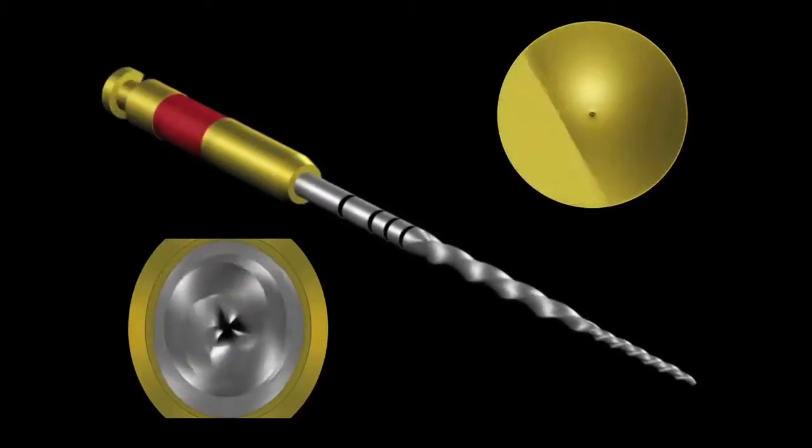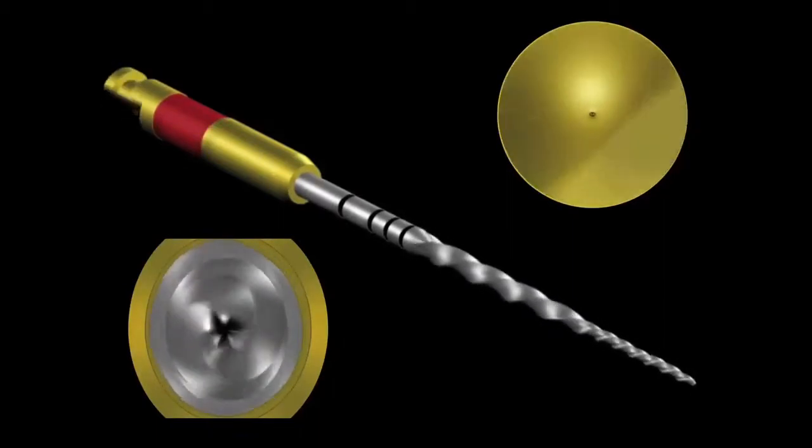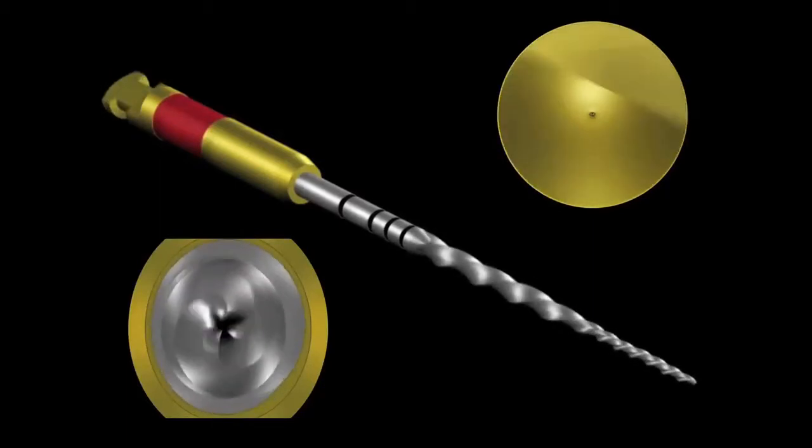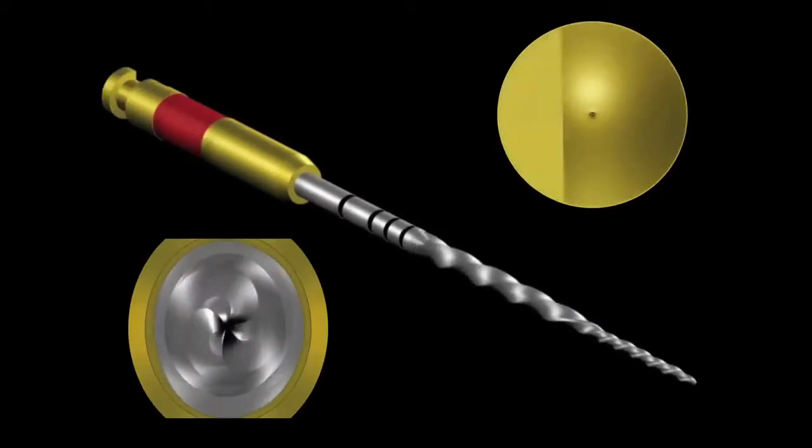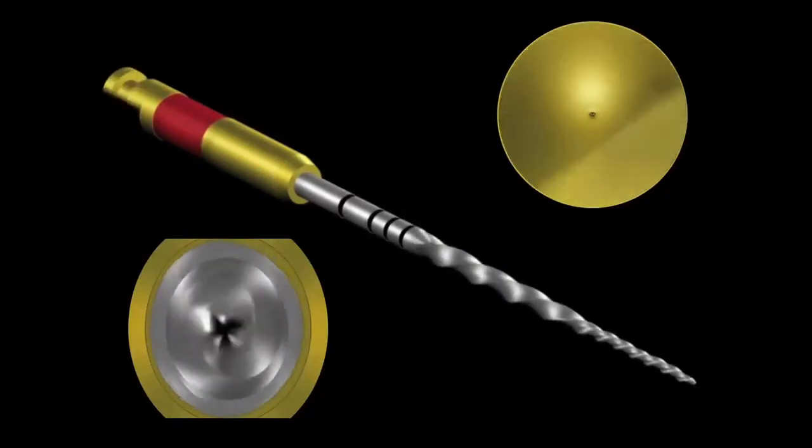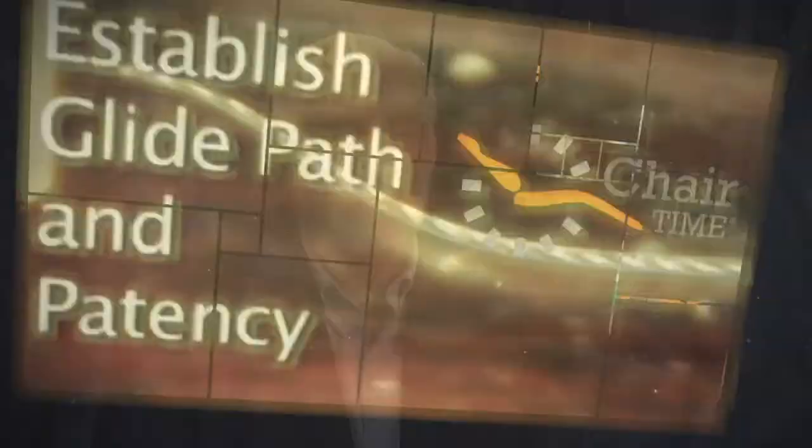Notice that the movement favors the counterclockwise direction so that there is more cutting and then relief on the file. Eventually, the file makes a complete revolution. These instruments are strong, being made of a revolutionary nickel-titanium product known as M-Wire, and enable the clinician to achieve a desired canal shape safely and efficiently with minimal effort.